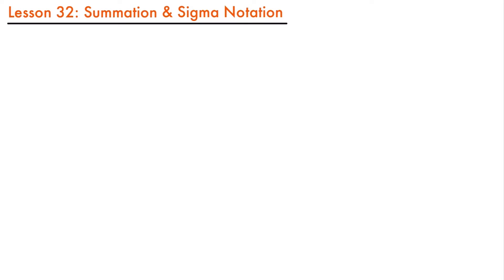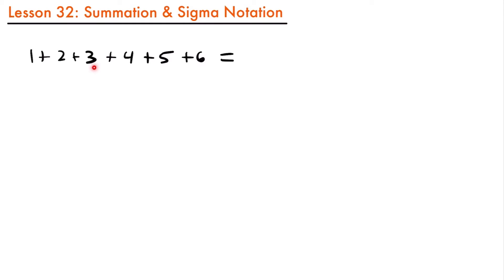Welcome back. Today we're going to be talking about summation and sigma notation. Consider the scenario where you want to add six numbers together — 1 plus 2 plus 3 plus 4 plus 5 plus 6. What would that be equal to? Well, 1 plus 2 is 3, plus another 3 is 6, plus 4 is 10, plus 5 is 15, plus 6 is 21.